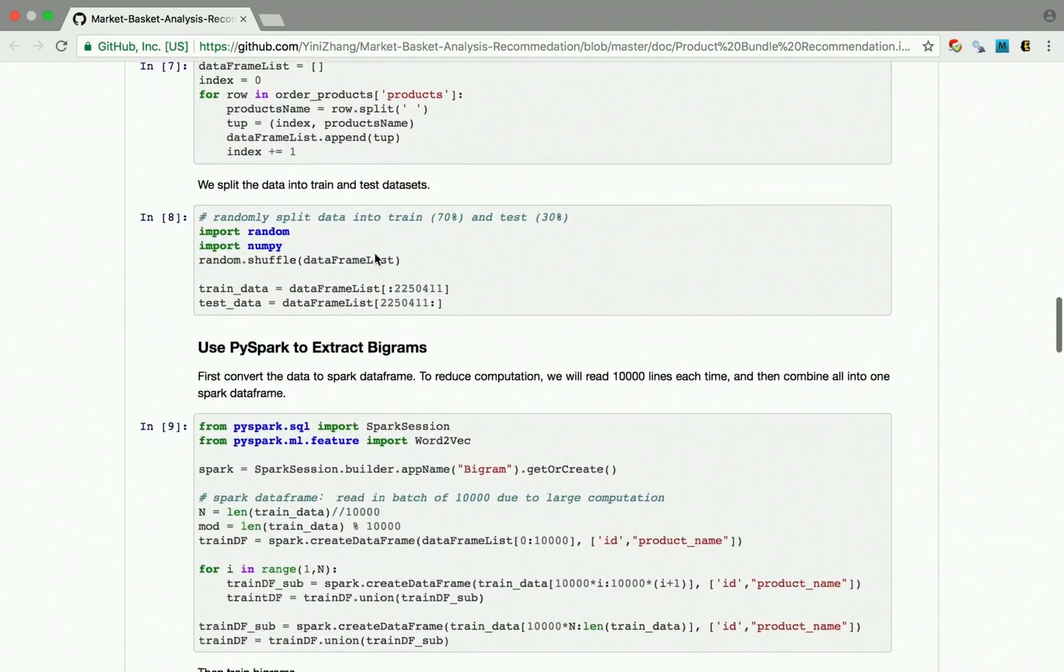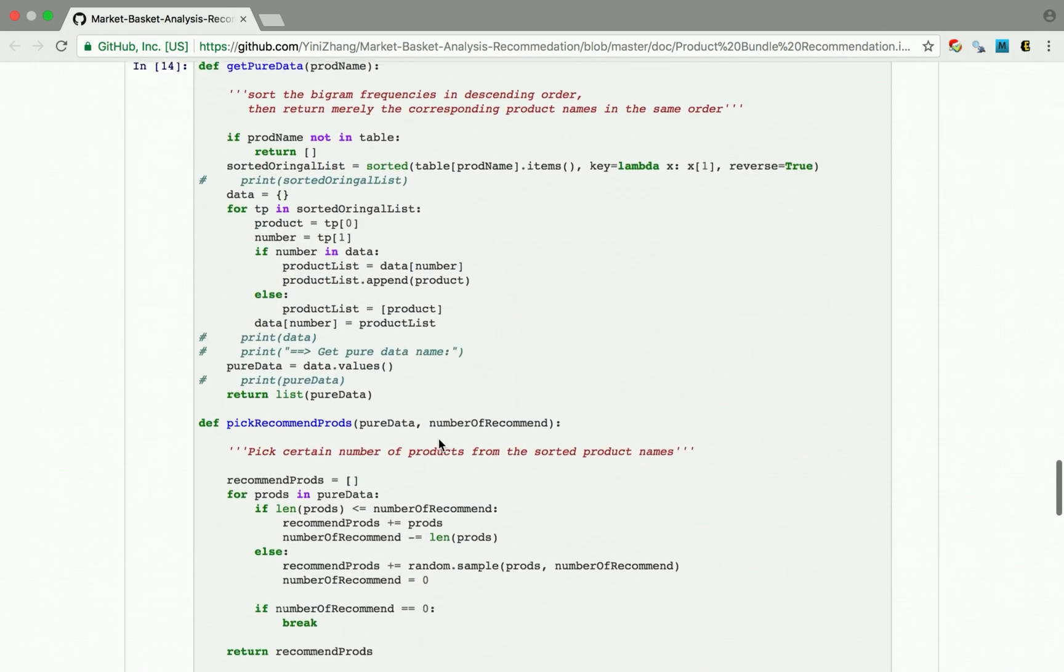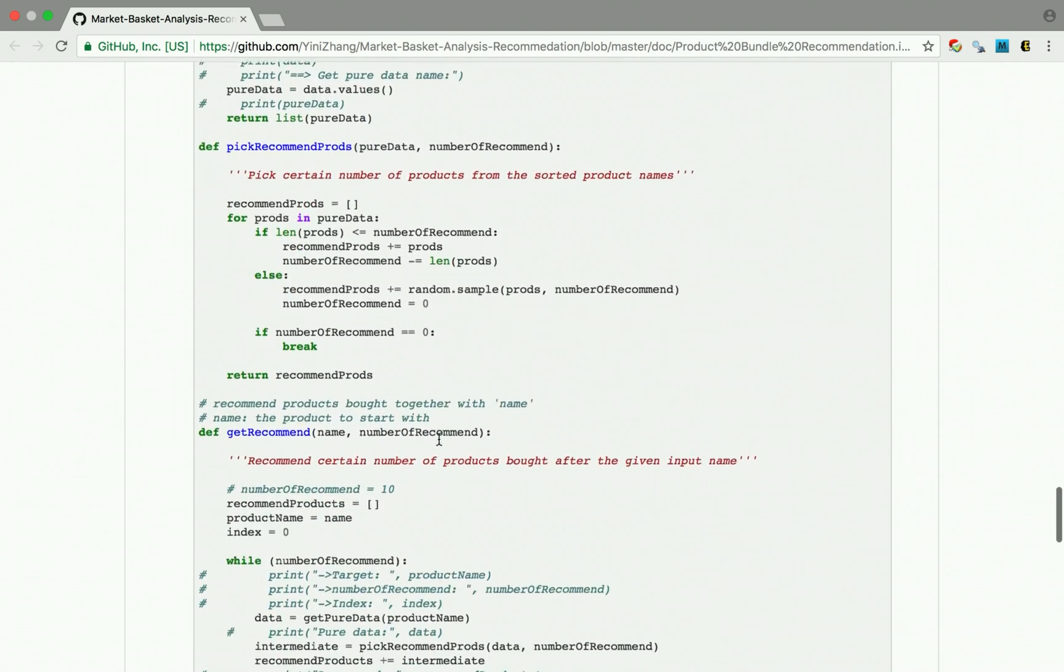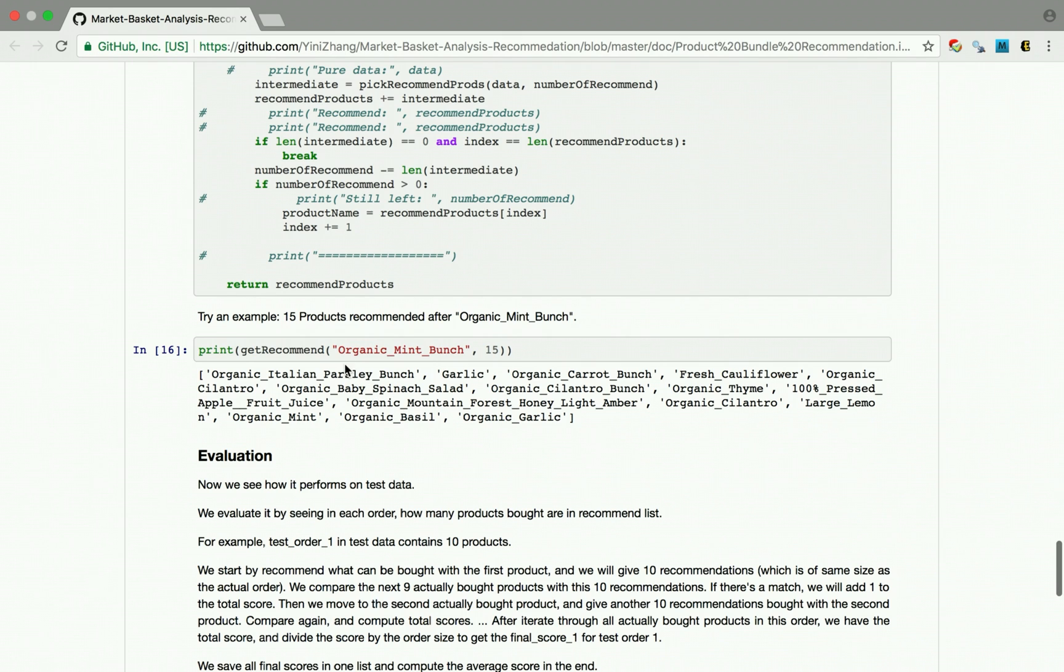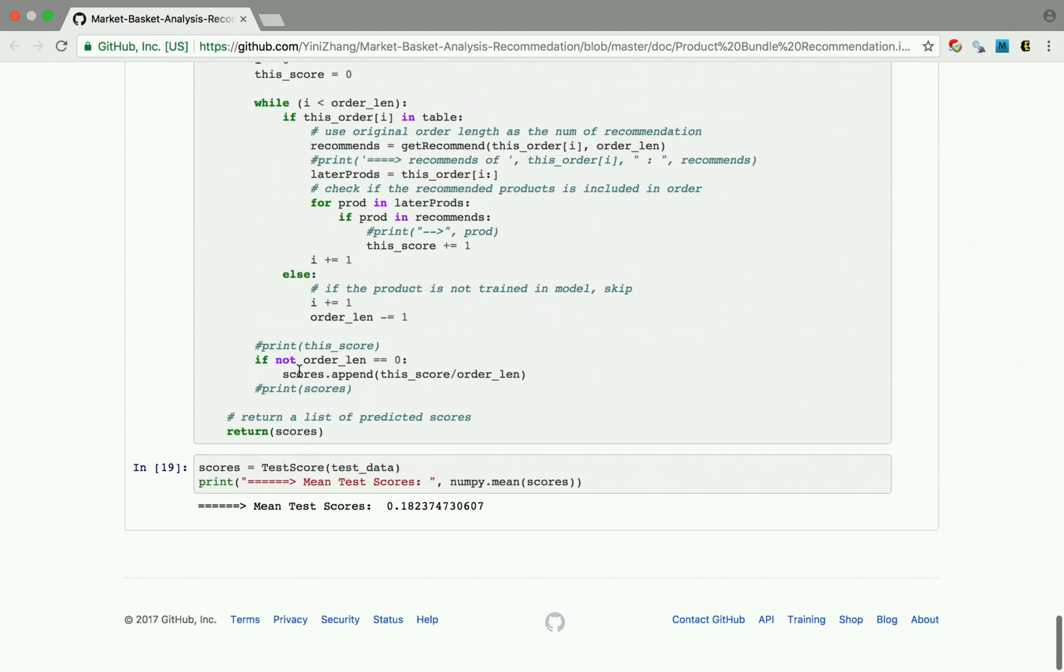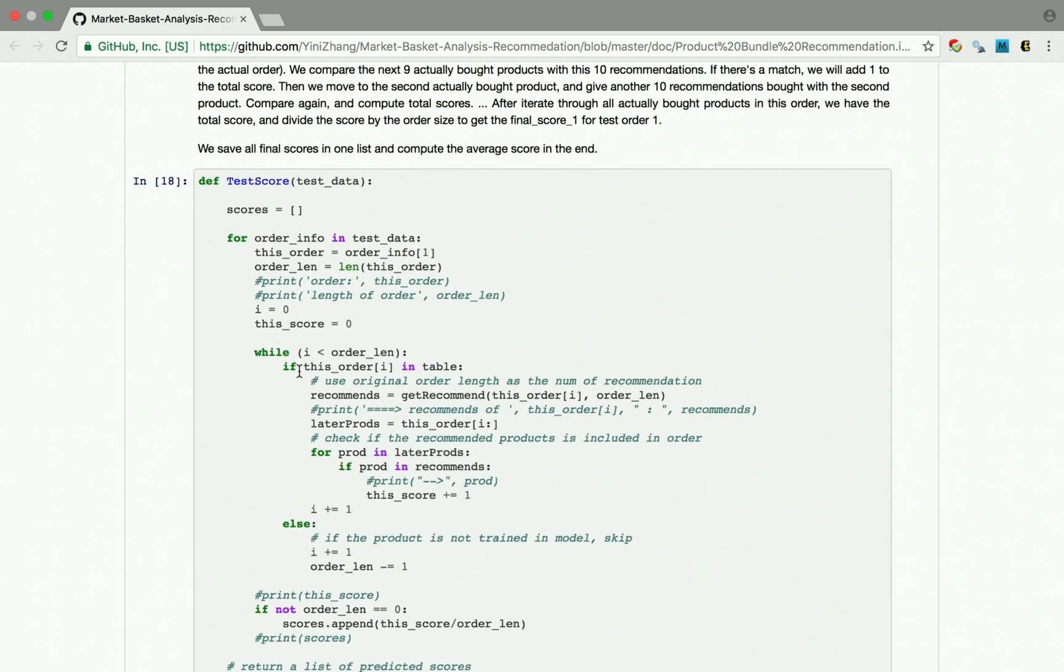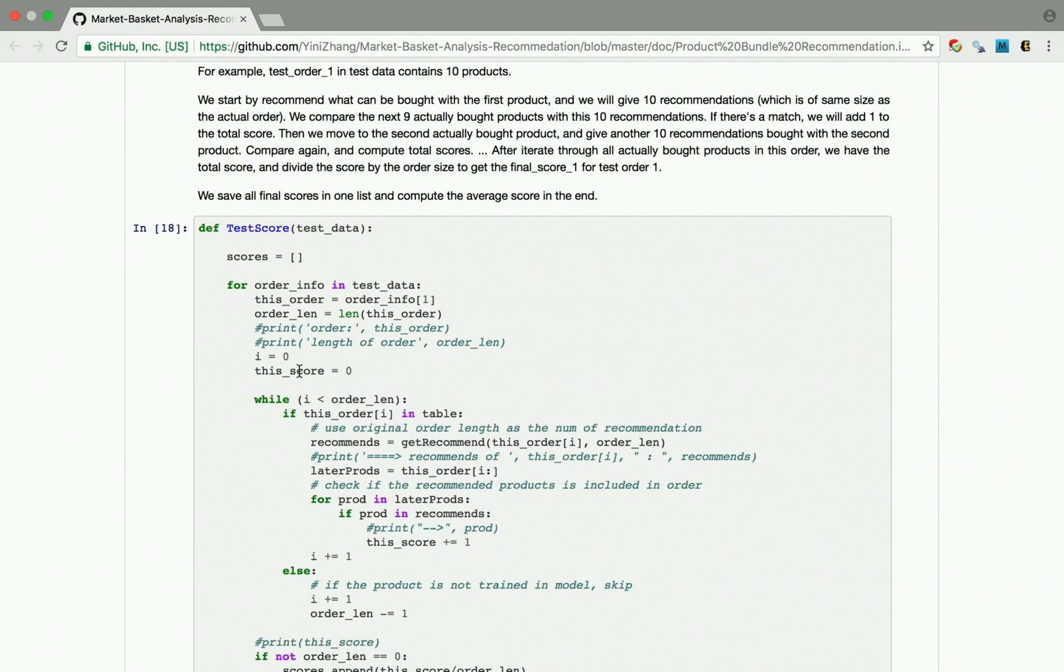So here are some results we get. Here are some usually bought together products. For example, banana and organic avocado are bought 36 times. These are the functions we use to generate our recommendation algorithm. For example, if we want to get 15 recommended products for organic mint branch, we will call this function and here's the result we get. Finally, we evaluate it on the test dataset. Our test score is 0.18. It means that in each order, 18% of the products they bought are actually from our recommendation list.